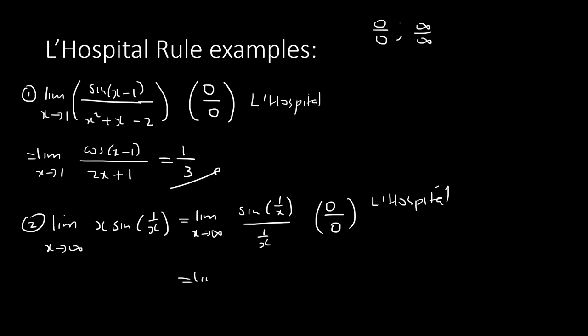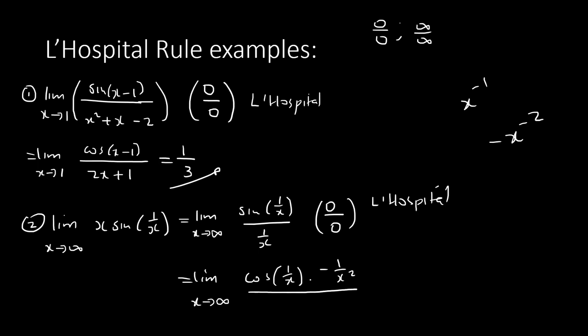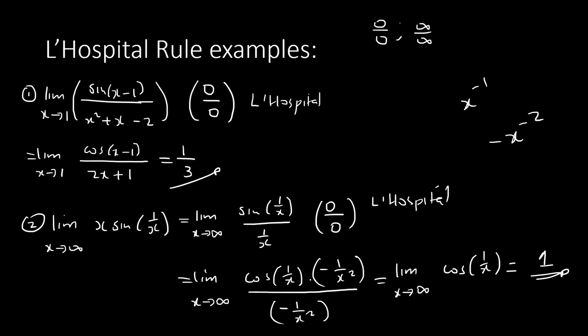Differentiate the top: derivative of sin(1/x) using chain rule is cos(1/x) · (−1/x²). Differentiate the bottom: derivative of 1/x is also −1/x². These cancel exactly, leaving just cos(1/x). Substitute 1/∞ = 0: cos(0) = 1. That's your answer.